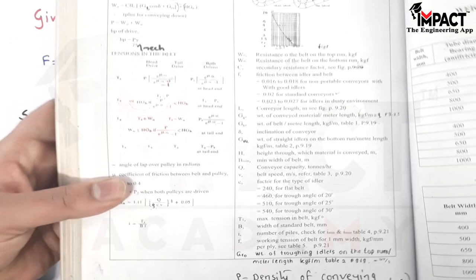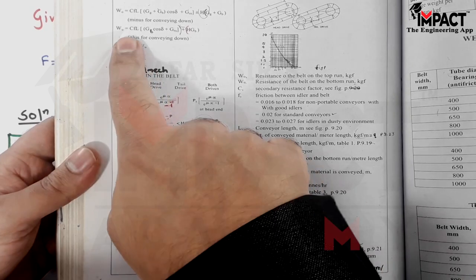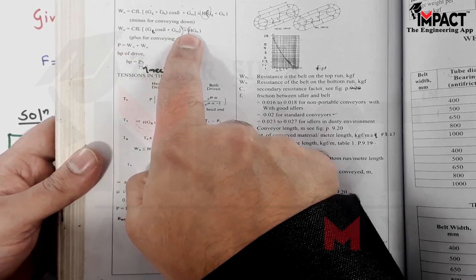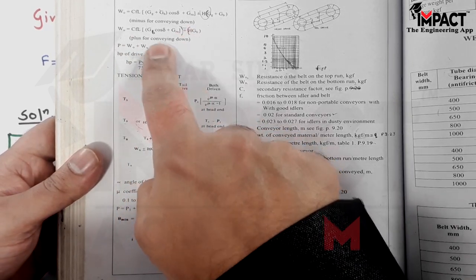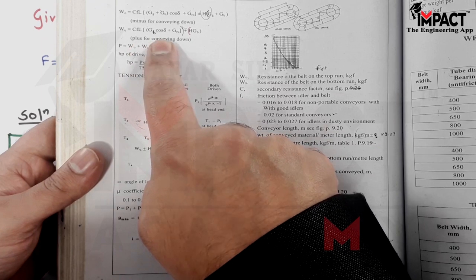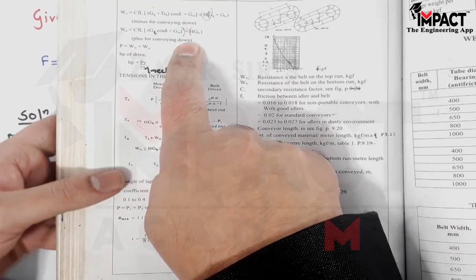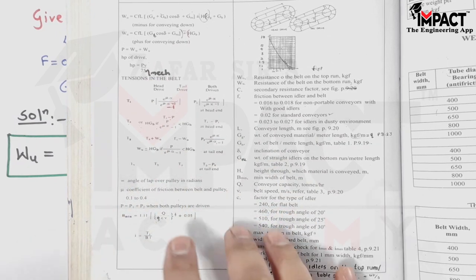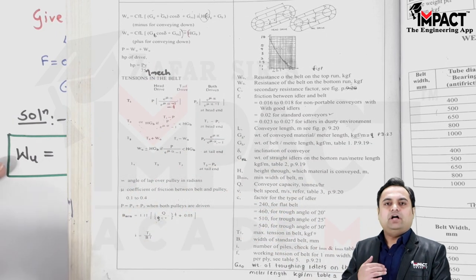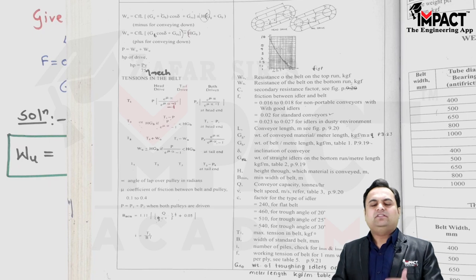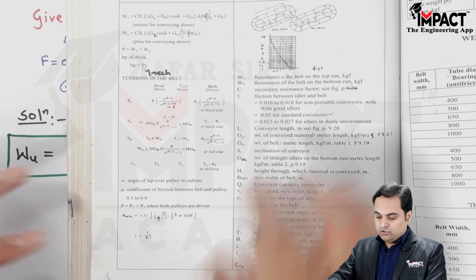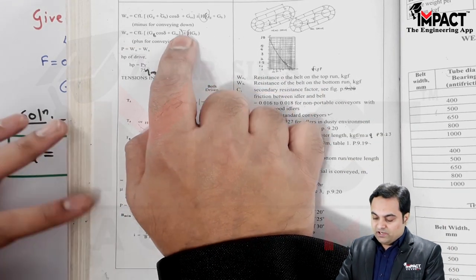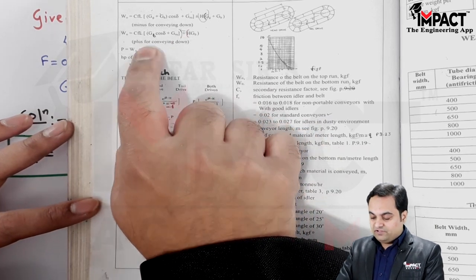Now as we can see this formula from PSG 9.18, here it is written in this formula we have plus or minus sign. We have to take plus sign if it is conveying down. Remember, whenever they have not mentioned in the question whether the material is being conveyed up or down, always we have to take that the material is conveying up. For conveying up we take negative sign, whereas for conveying down we take plus in W suffix u formula.